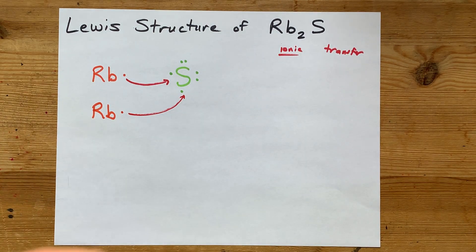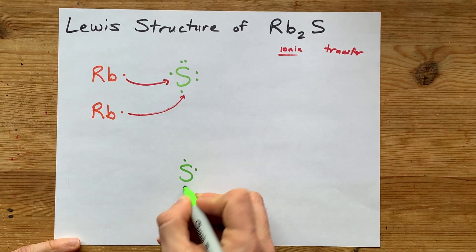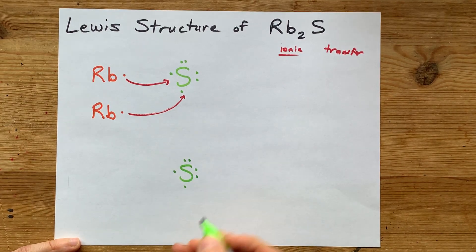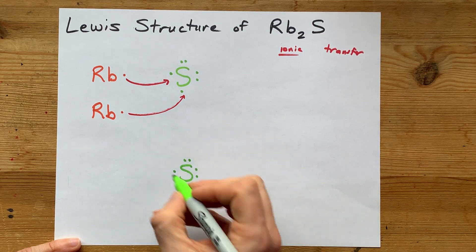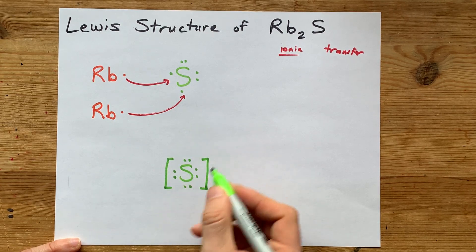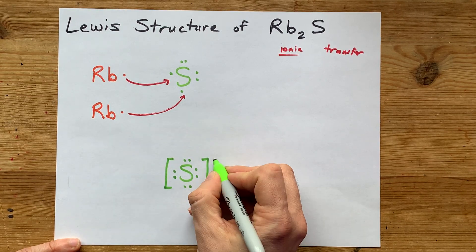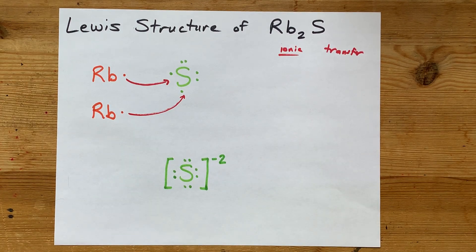Let's draw that out. The sulfur had 6 electrons of its own, but now it has 1 and 1, 8 electrons total. Put it in square brackets, because it now has more electrons than it started with. That's a total charge of minus 2 for 2 extra electrons.